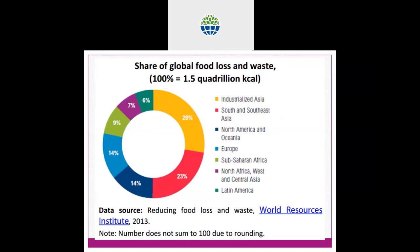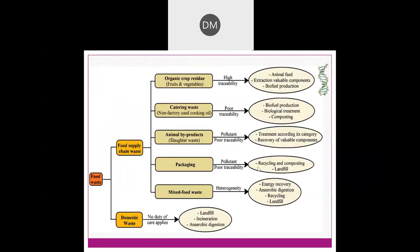These are the total percentage losses by world region. Food losses are occurring everywhere — in industrial Asia, south and southeast Asia, and North America. In some countries, they have developed several technologies to convert this wastage into value-added byproducts. In our country, we immediately need to deploy several technologies to control wastage.